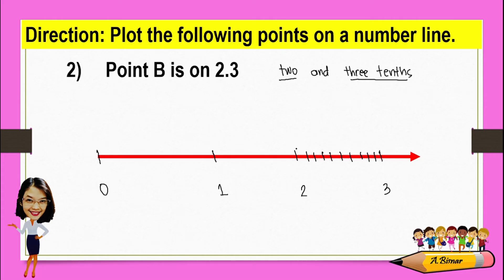This is 2.1, 2.2, 2.3, 2.4, 2.5, 2.6, 2.7, 2.8, 2.9, and then 3.